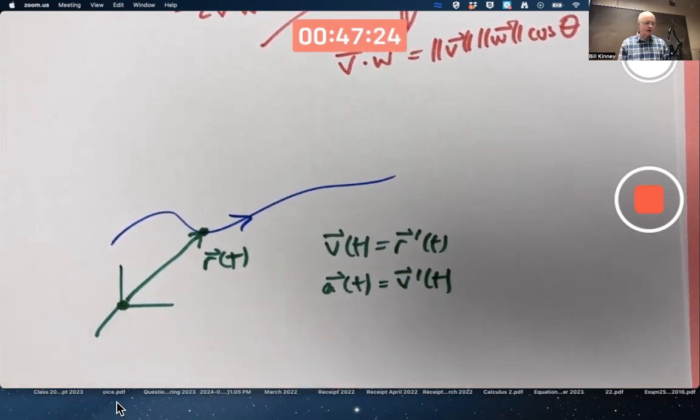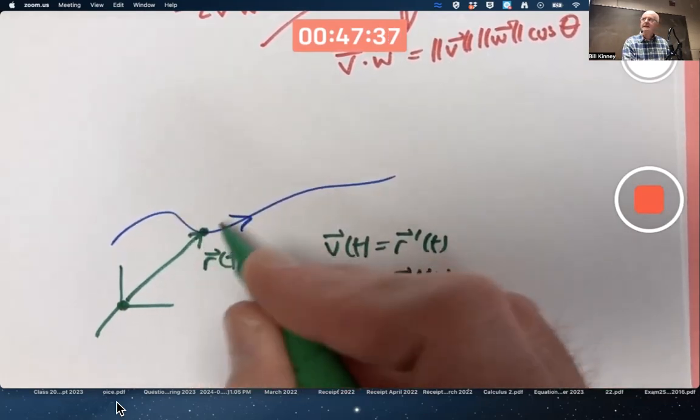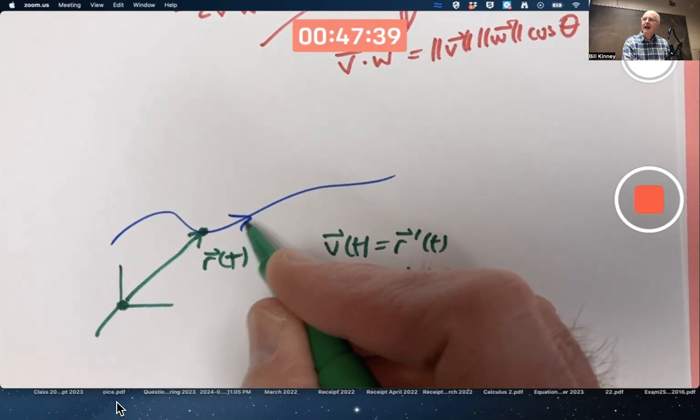The acceleration vector for an arbitrary motion like this is not as simple as circular motion, where it points straight toward the center of the circle. The acceleration vector can be doing lots of wild things as you move.